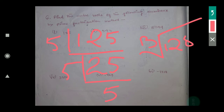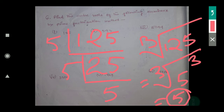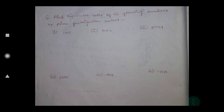Cube root of 125 means cube root of 5 cubed. This cube and this cube root will get cancelled. You have to think through this in your mind — the cube and cube root cancel — so the answer is just 5. That is your cube root of 125.